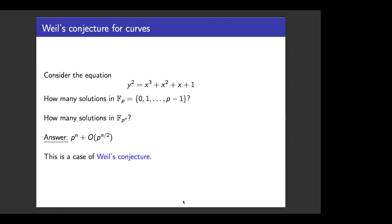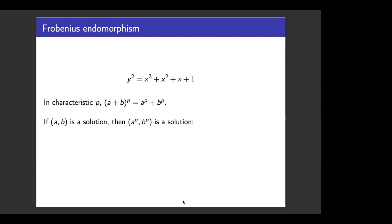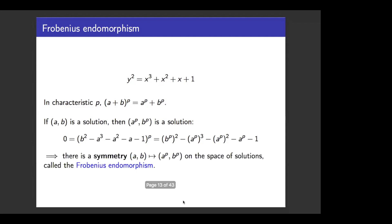I'd like to point out one of the characteristic features of working over a field like F_p. Namely, in characteristic p — meaning a setting where p equals zero — the pth power map becomes additive. This implies that any time you have a solution to polynomial equations over F_p, the pth power is also a solution. So to summarize: over F_p, there is a symmetry of the space of solutions to polynomial equations which sends (a, b) to (a^p, b^p), and this symmetry is called the Frobenius endomorphism.